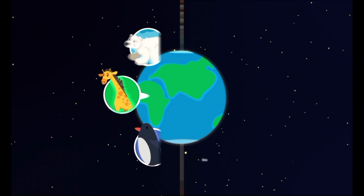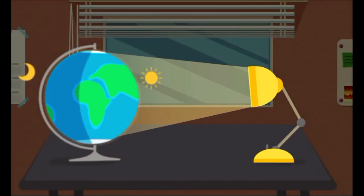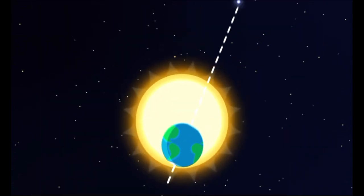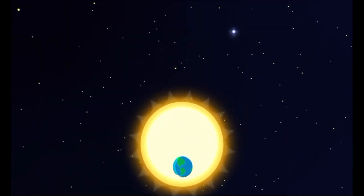The Earth rotates on its axis. That is why we see day change to night. This axis is tilted and is always pointed in one direction, towards Polaris.